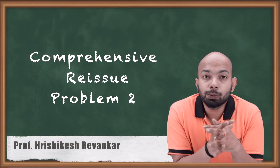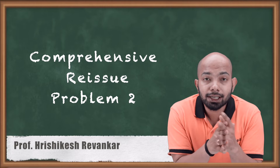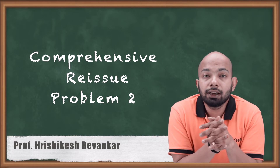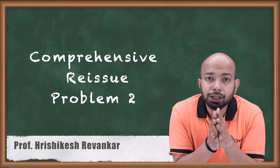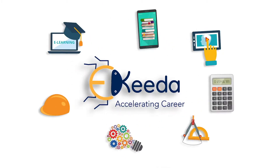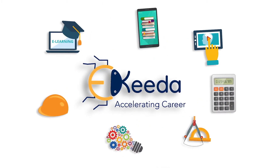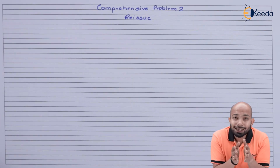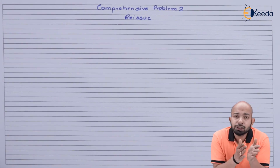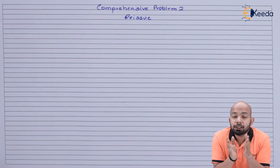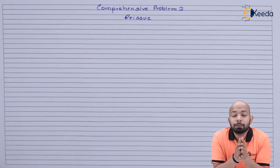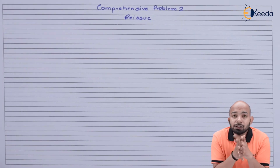Hello friends, we will be discussing an illustration completely related to the reissue of forfeited shares. We'll understand how the calculation of profit or loss is done in case of any such reissue. Reissue of shares is about forfeited or cancelled shares being reissued to some other customer, client, or shareholder. Whenever such reissue happens, there is certain loss involved.